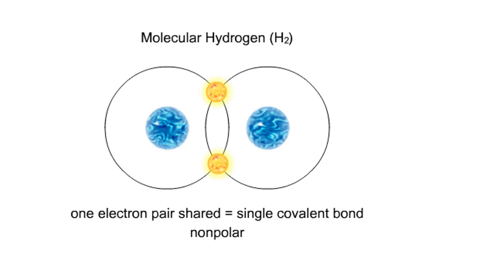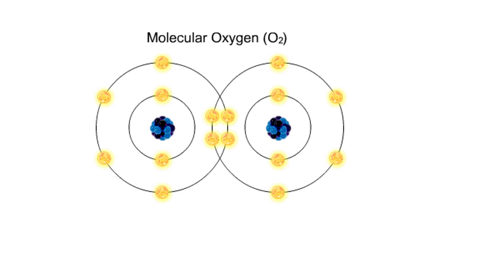An oxygen atom has two electron vacancies in its outer shell. Two oxygen atoms can share two pairs of electrons, forming a double covalent bond. Again, the electrons are distributed equally, and the bond is nonpolar.